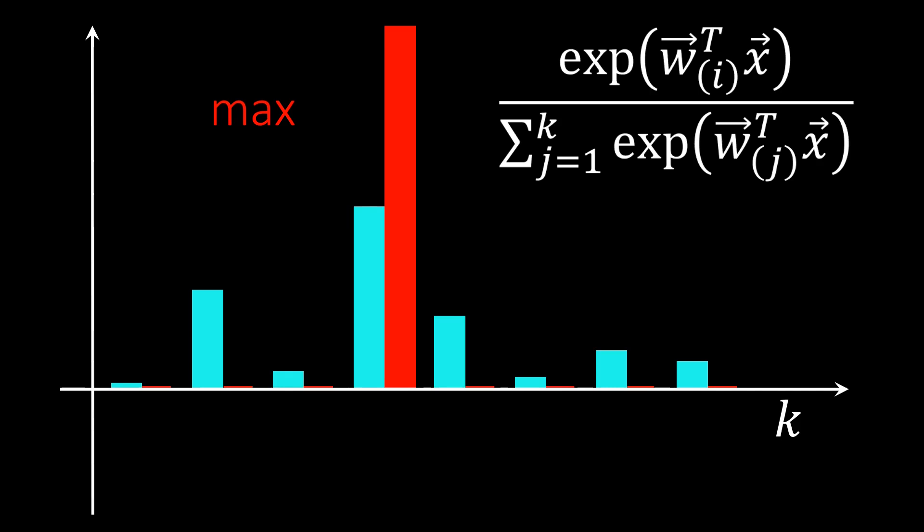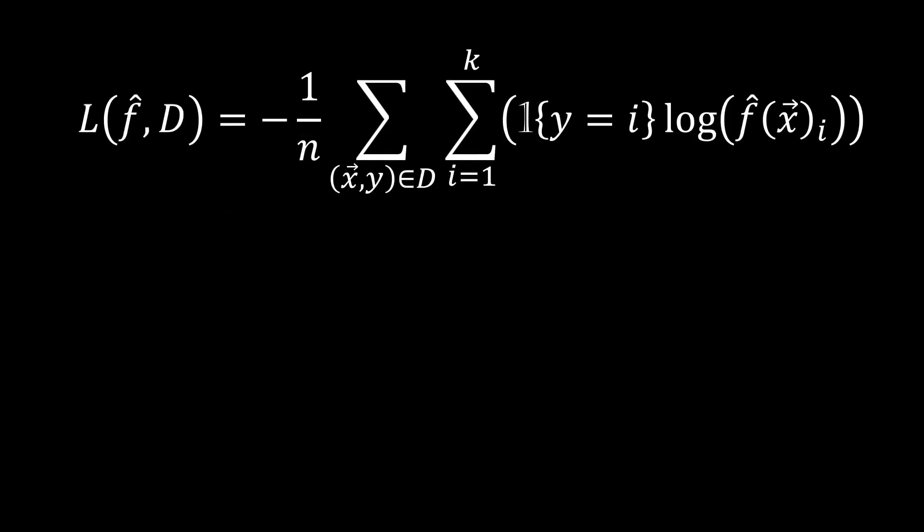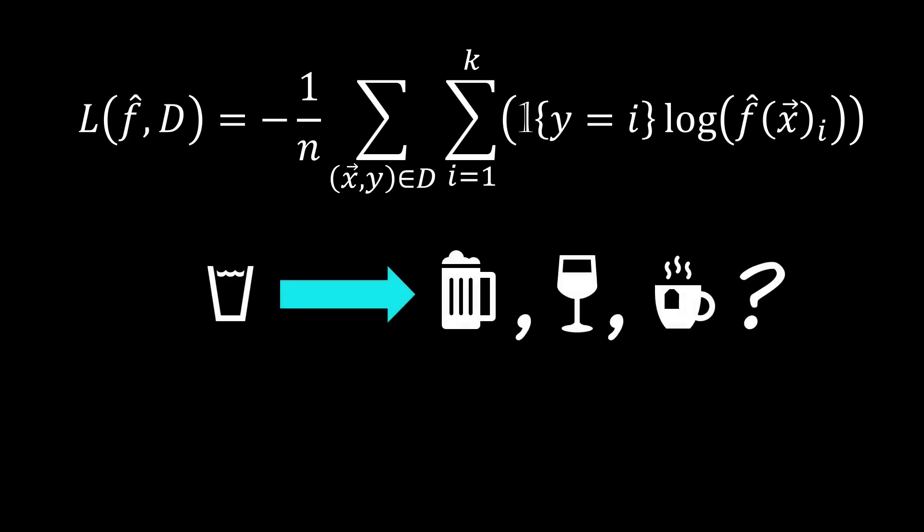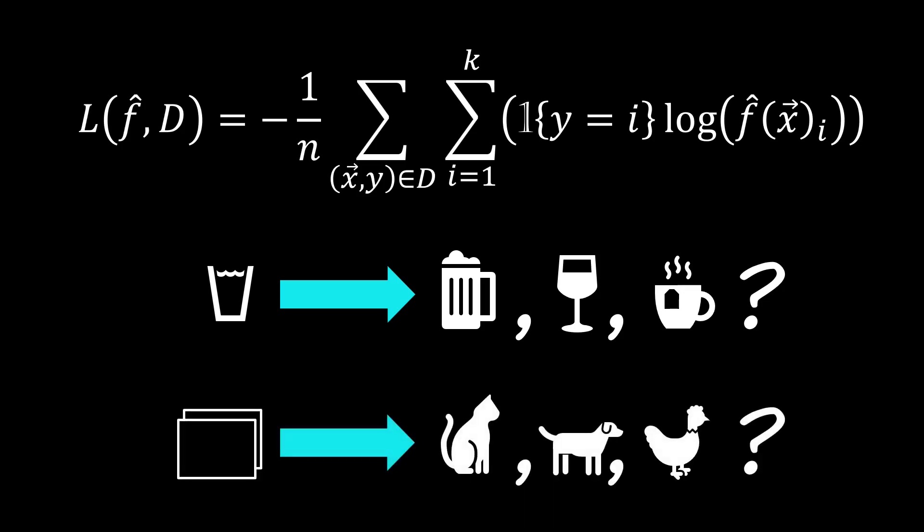Similar to logistic regression, we can derive a loss function for the softmax. Note that for k equals 2, this loss is identical to the loss for logistic regression discussed earlier, only the notation has been changed to use the indicator function. Differentiating this loss and using gradient descent, we can train our classifier to distinguish a liquid. Note that the methods discussed here are generally applicable, so we can train all different types of classifiers — for example, classifying images into cats, dogs, and chickens.